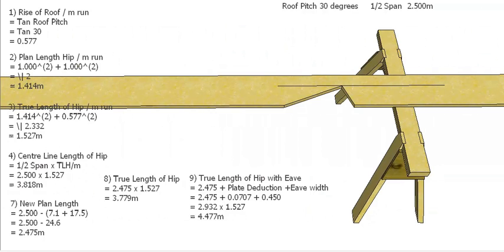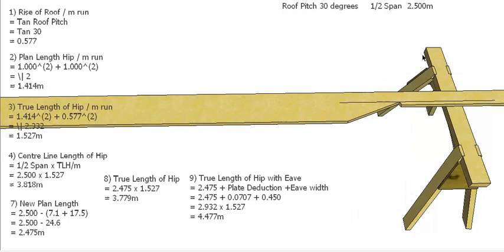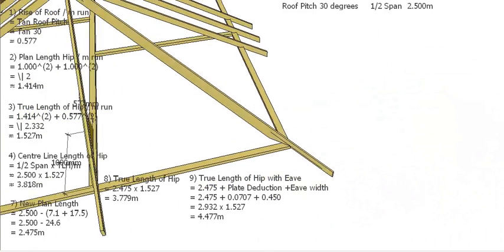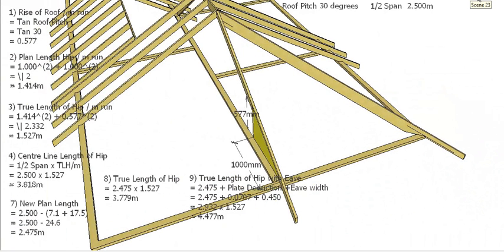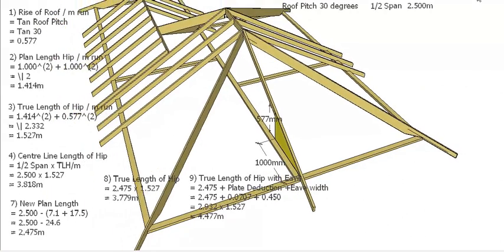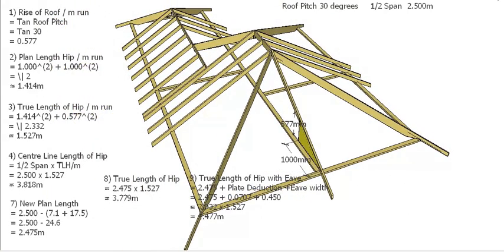We don't need to add on for our plate deduction, we've already worked it out. We can then measure a further 4.477 to our point of our tail and we can cut the tail off. And then of course we can test fit it. If it works, well and good, we can check it for the other positions and then we can fit all our hips.